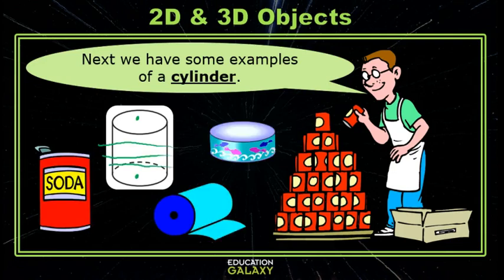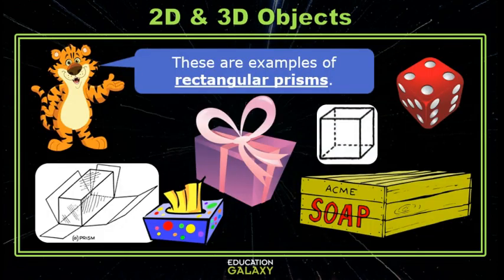Here are some other examples. These are examples of a rectangular prism. If we unfolded a rectangular prism, we would see that the sides are always rectangles. This is true for any prism. The reason this is called a rectangular prism is because the bases are rectangles.